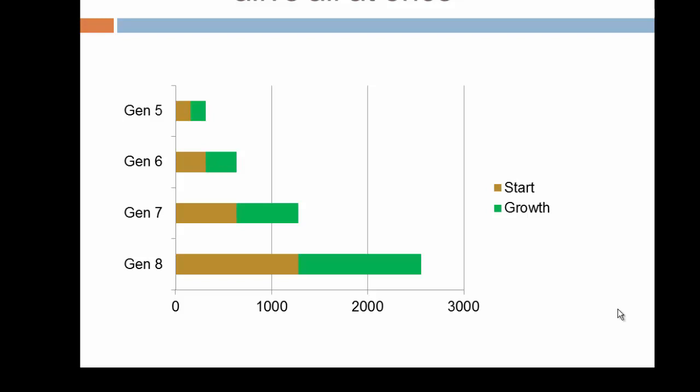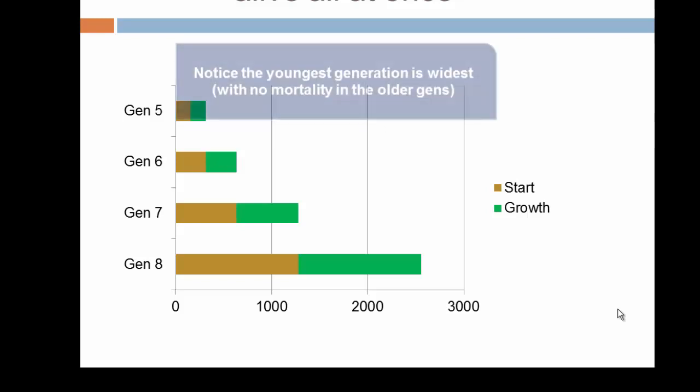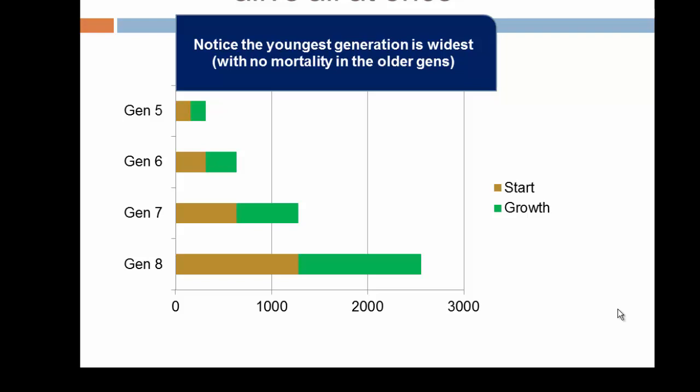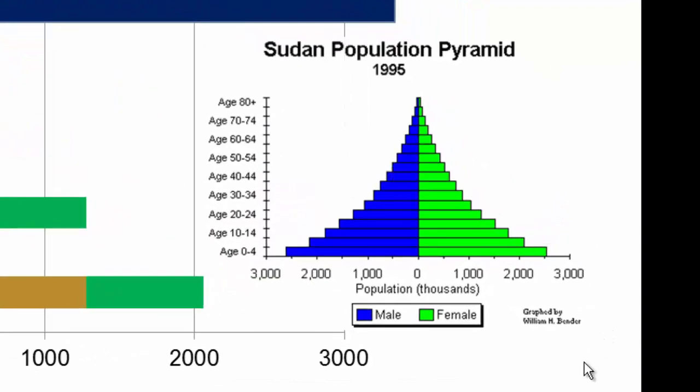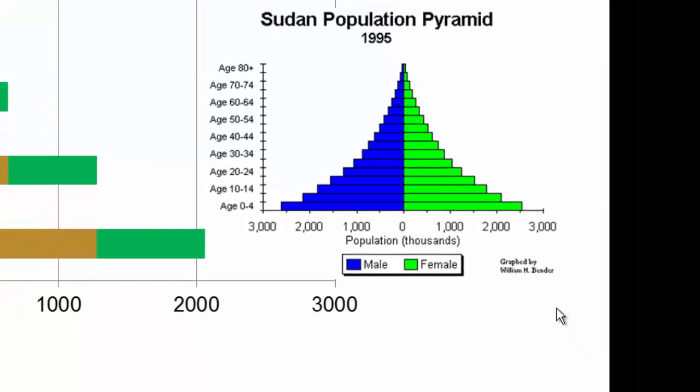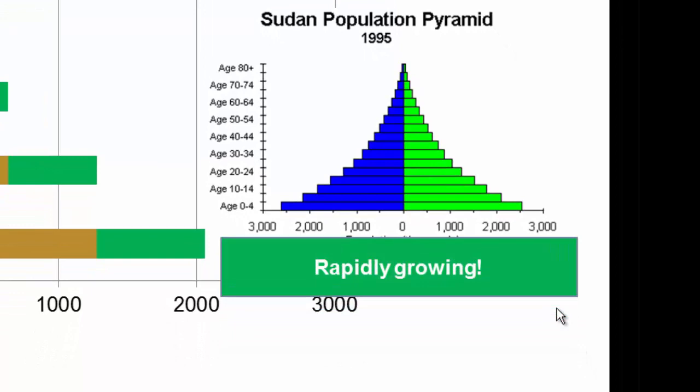This produces a pattern we see in rapidly growing populations: the youngest generations are the widest and the oldest are the narrowest. Here's a population pyramid of Sudan — the population over age 60 is quite slight, whereas it's very broad from age zero to four. While mortality plays a role, what we're also seeing here is a rapidly growing population, and that's why the pyramid is so broad at the bottom.